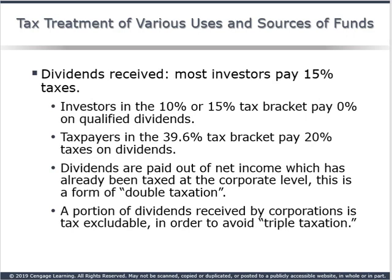With dividends, most investors pay 15%; however, that can go up to 20%, and for very high wealth people there's an additional 3.8% tax, so the very wealthiest would see a 23.8% tax on this, while most other investors would see 15%, and some would see zero. This is what we would call double taxation, because the corporation is taxed on its earnings, and then once it distributes those earnings to its shareholders, the shareholders are taxed on their income.